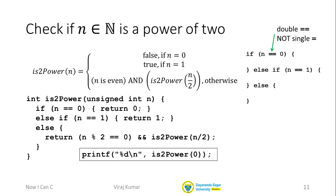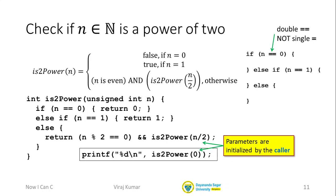Now, I want to highlight a point I made in the previous lecture. Our is2power function takes one parameter, which is an unsigned int named n. When this function is called, n is set to a value by the caller — this is exactly what I mean when I say that parameters are initialized by the caller. So in main, when we say is2power(0), the value 0 is copied into the parameter n.